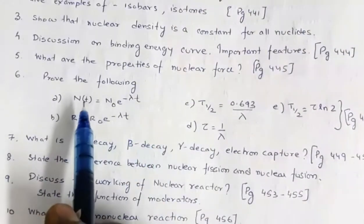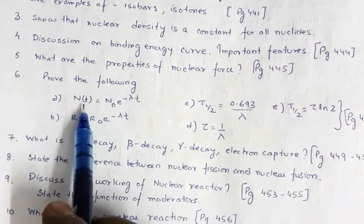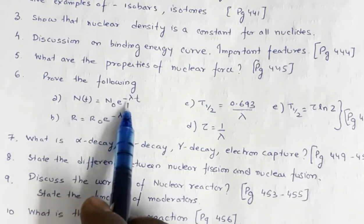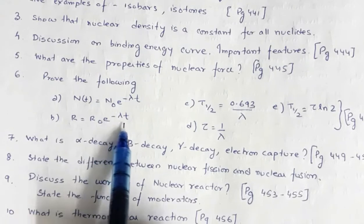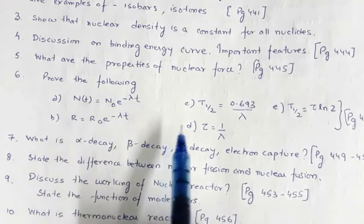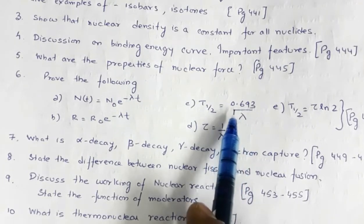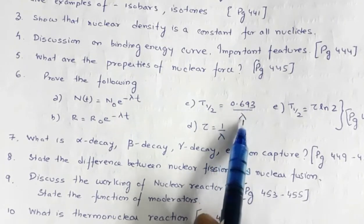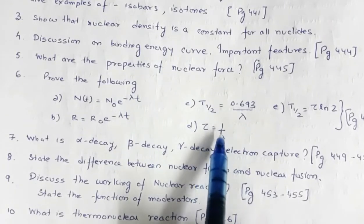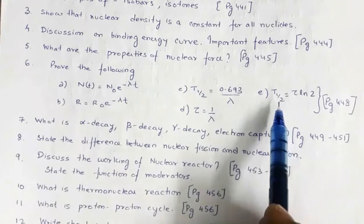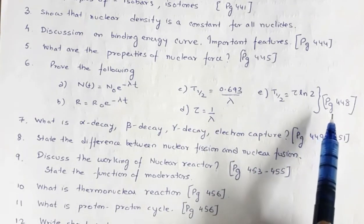Then you may be asked to prove these relations: N(t), that is number of nuclei at time t, is equal to N₀e^(-λt). R is equal to R₀e^(-λt), where R is the activity. Half life T_half is equal to 0.693 by λ or ln 2 by λ. Then mean life is equal to 1 by λ, τ is equal to 1 by λ. Then this is the relation between half life and mean life. So all these mathematical relations are given in page number 448.